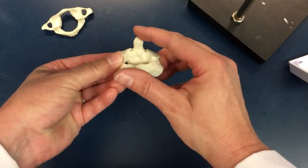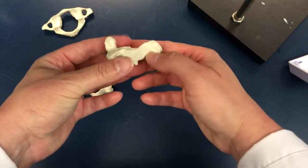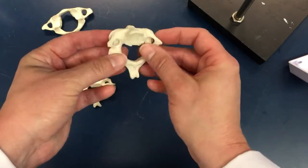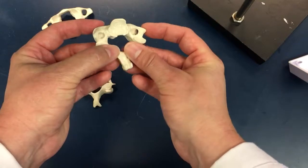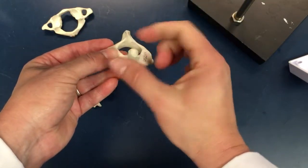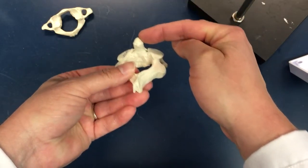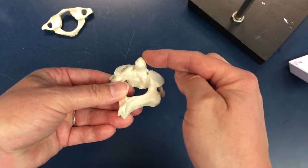This vertebrae has a protrusion sticking up, and this is the C2 axis. You can see it has the transverse foramen, but it also has this protrusion sticking up like a thumb, and this is referred to as the dens, also known as the odontoid process.